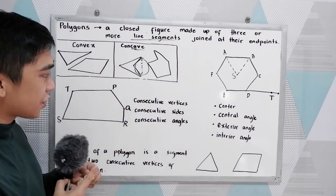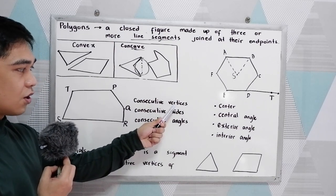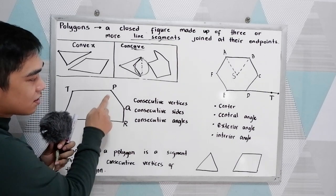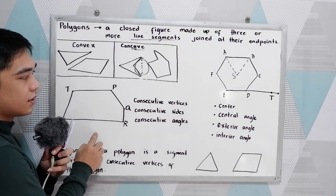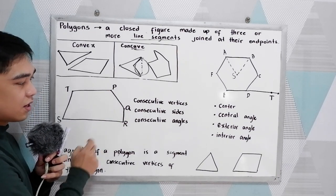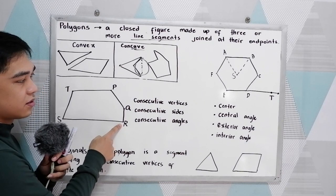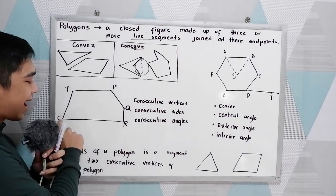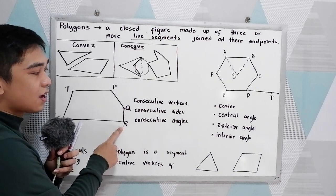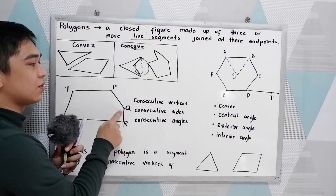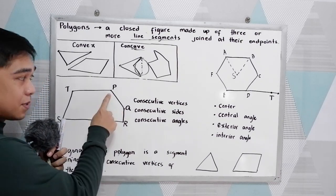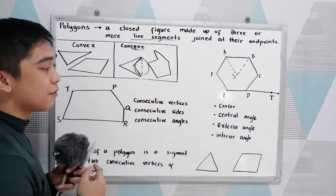You will also encounter the term consecutive vertices. When we say consecutive vertices, it is the vertices next to each other. For example, P and Q are consecutive vertices. Q and R are also consecutive vertices. S and R are also consecutive vertices. T and Q are not consecutive. S and P are also not consecutive vertices.